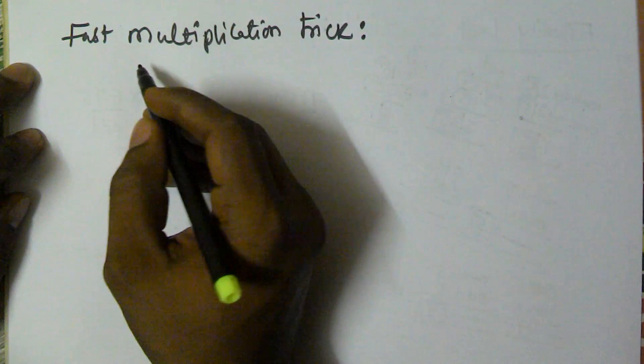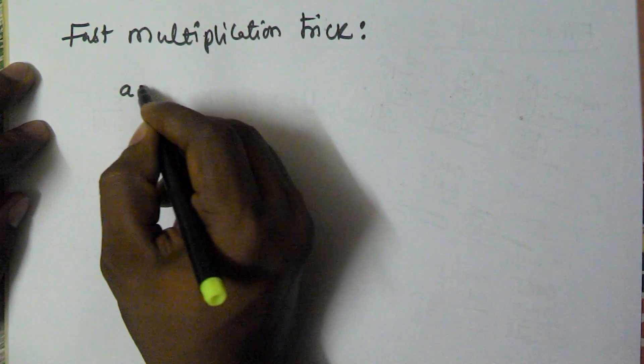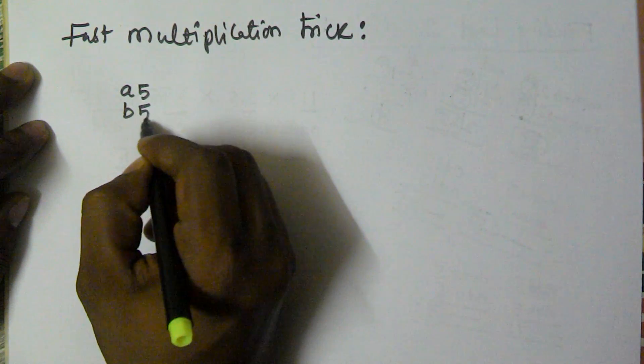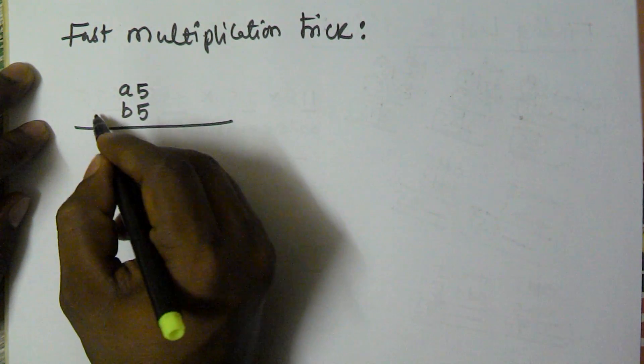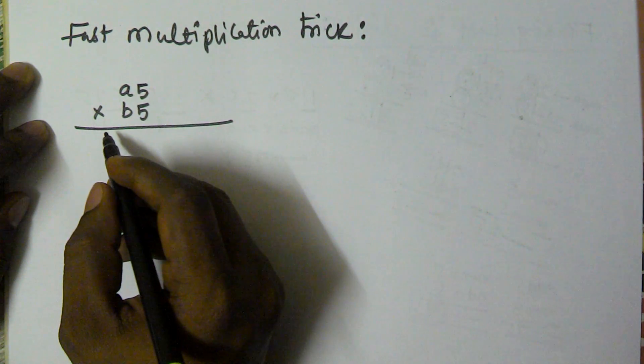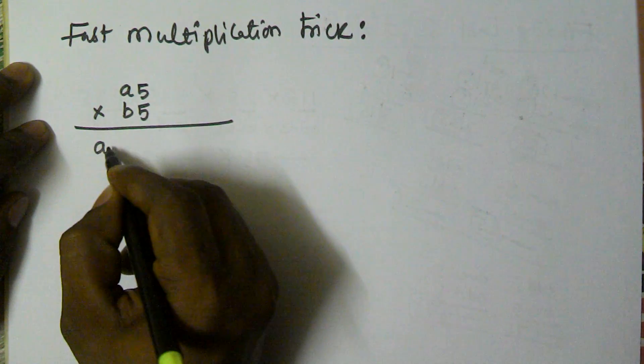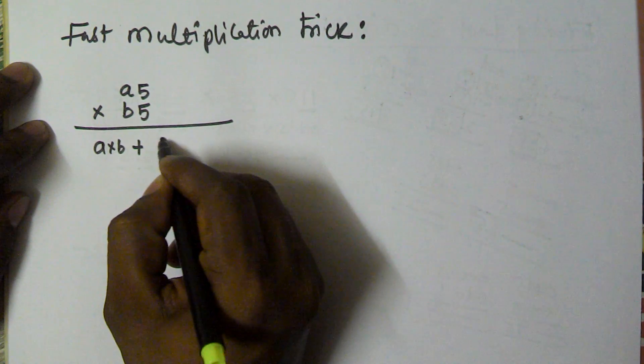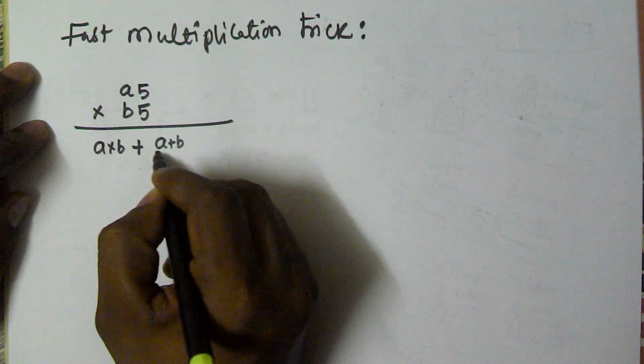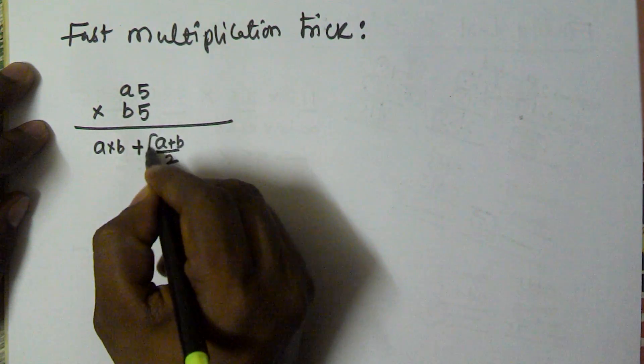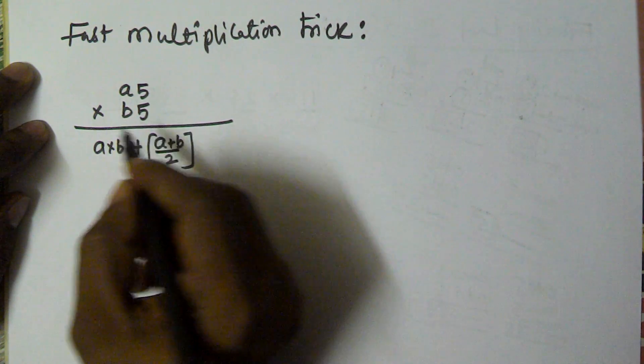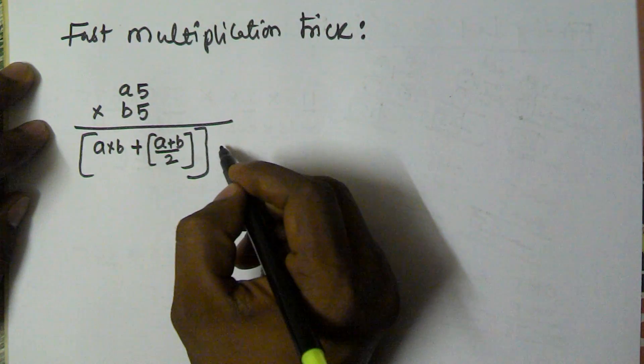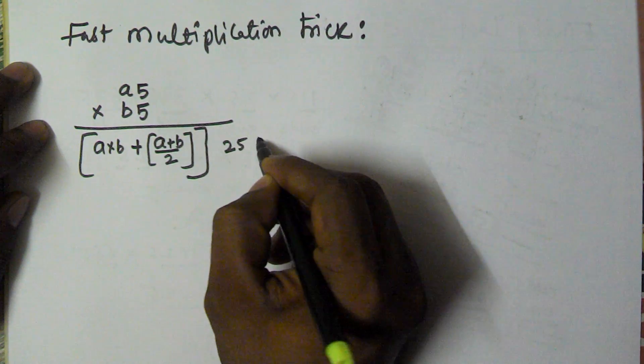The generalized formula is a5 and then b5. The multiplication of these two numbers is a into b plus a plus b by 2, and then the remaining digits are 25 or 75.